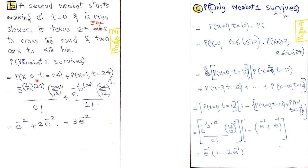The probability of the second wombat surviving is the probability of having no cars in the 24-second interval plus the probability of having one car. Since we cannot have zero and one car simultaneously, the joint probability is zero, so we simply add the two Poisson probabilities together to reach the final answer.